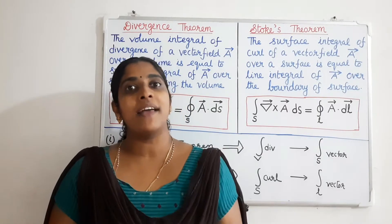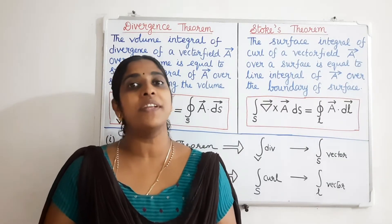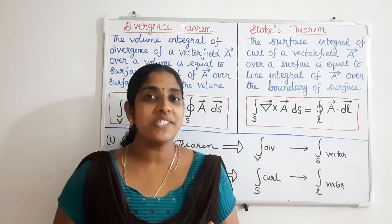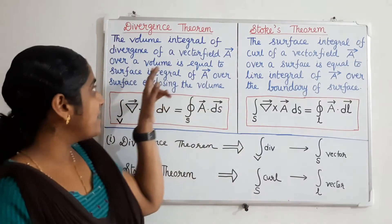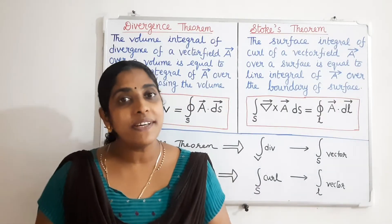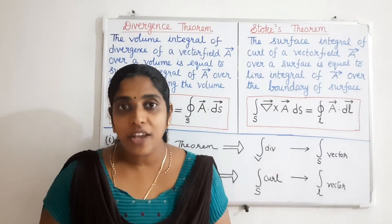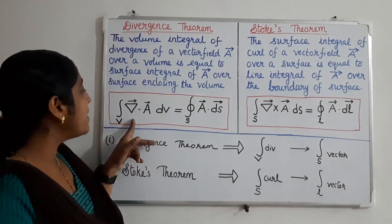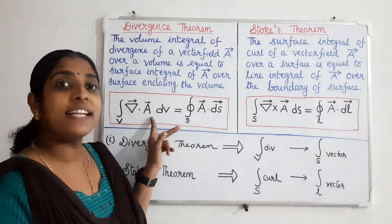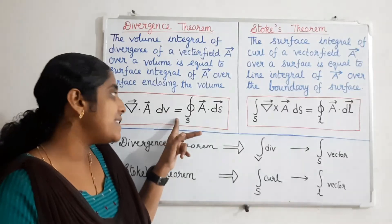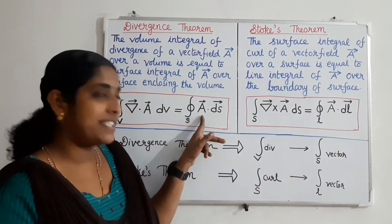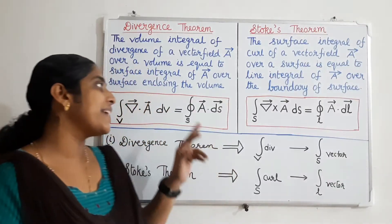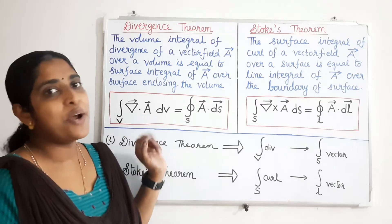Using the divergence theorem and Stokes theorem, we can convert one type of integral into another. The divergence theorem gives the relationship between volume integral and surface integral. It states that the volume integral of divergence of a vector field over a volume is equal to the surface integral of that vector over a surface which encloses that volume. Using the divergence theorem, we can write the surface integral of a vector in terms of the volume integral.